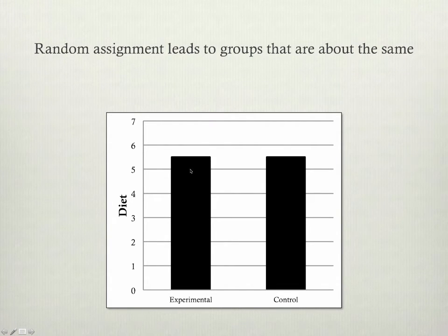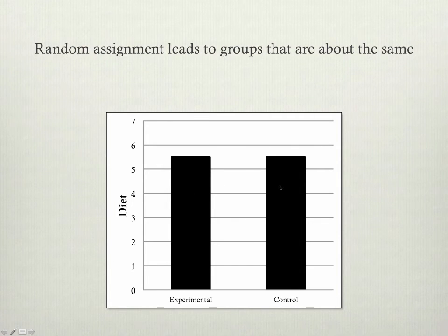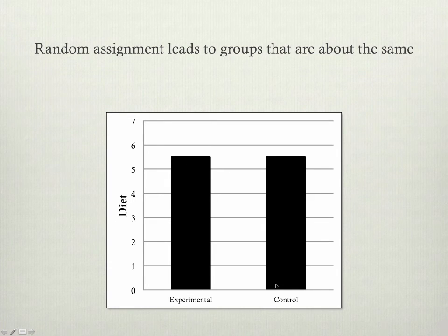The point is, any differences — if we're picking a reasonable number of people for each group randomly — will tend to equalize out, and we'll get about the same average level on whatever that variable is between the groups.